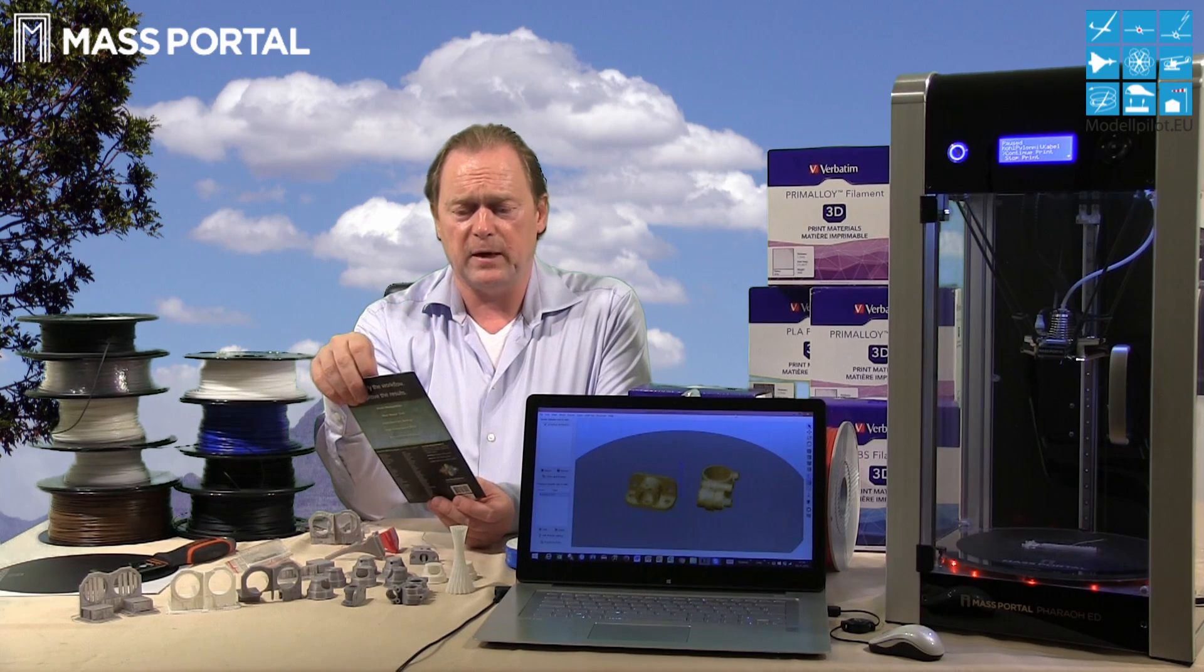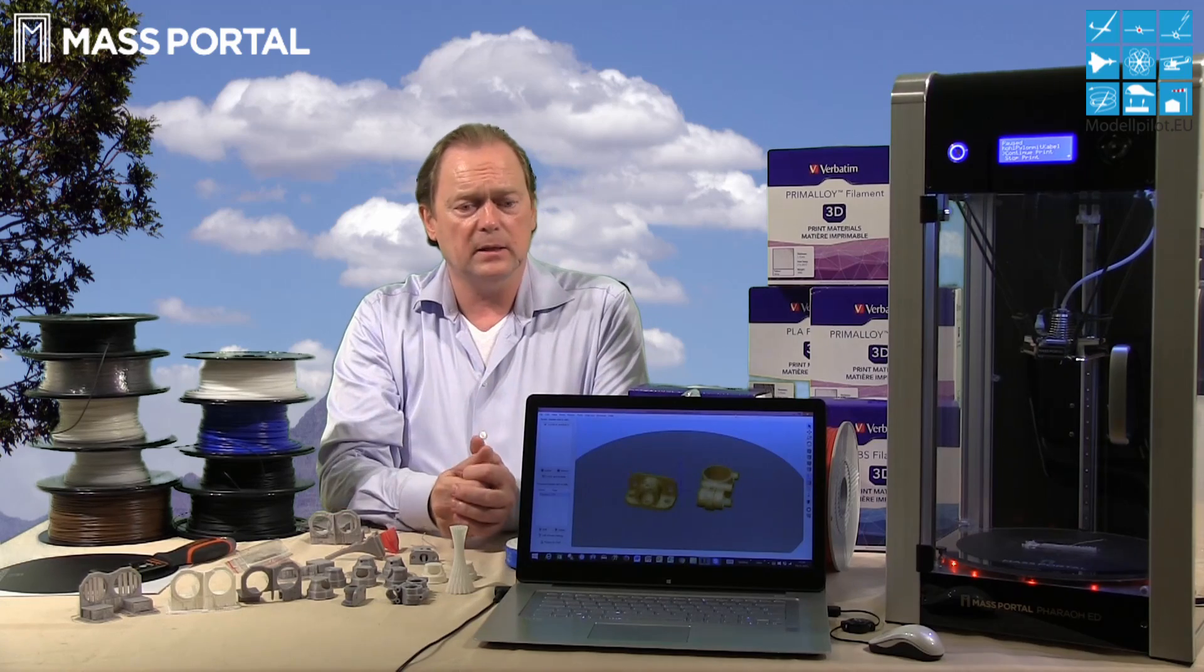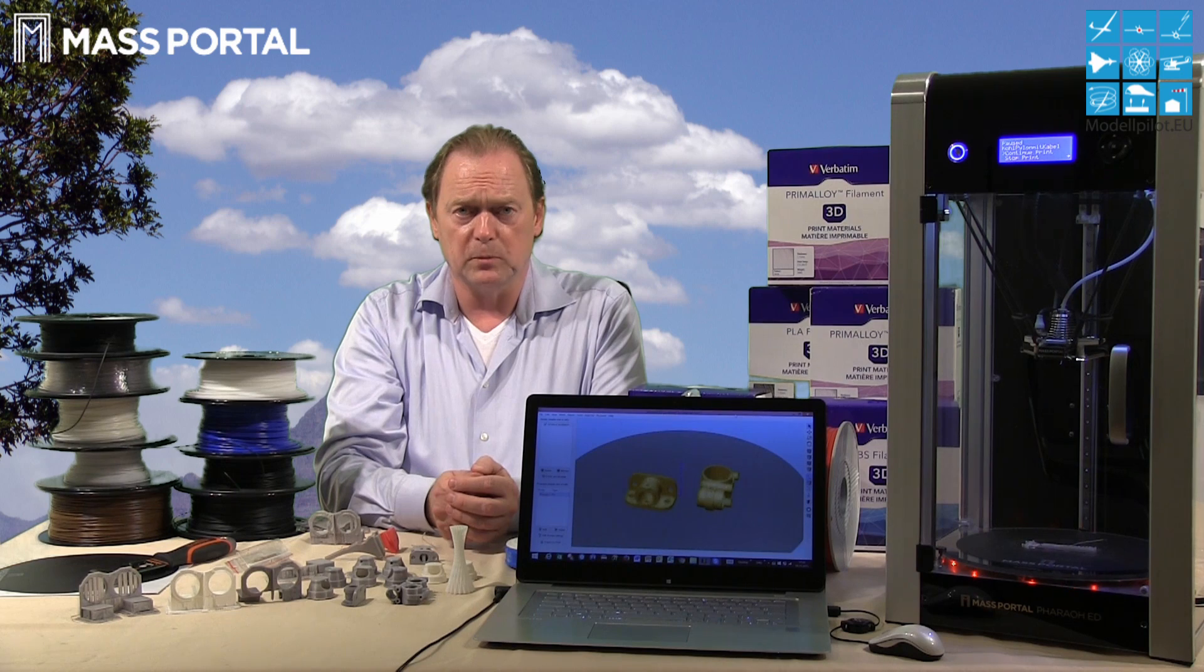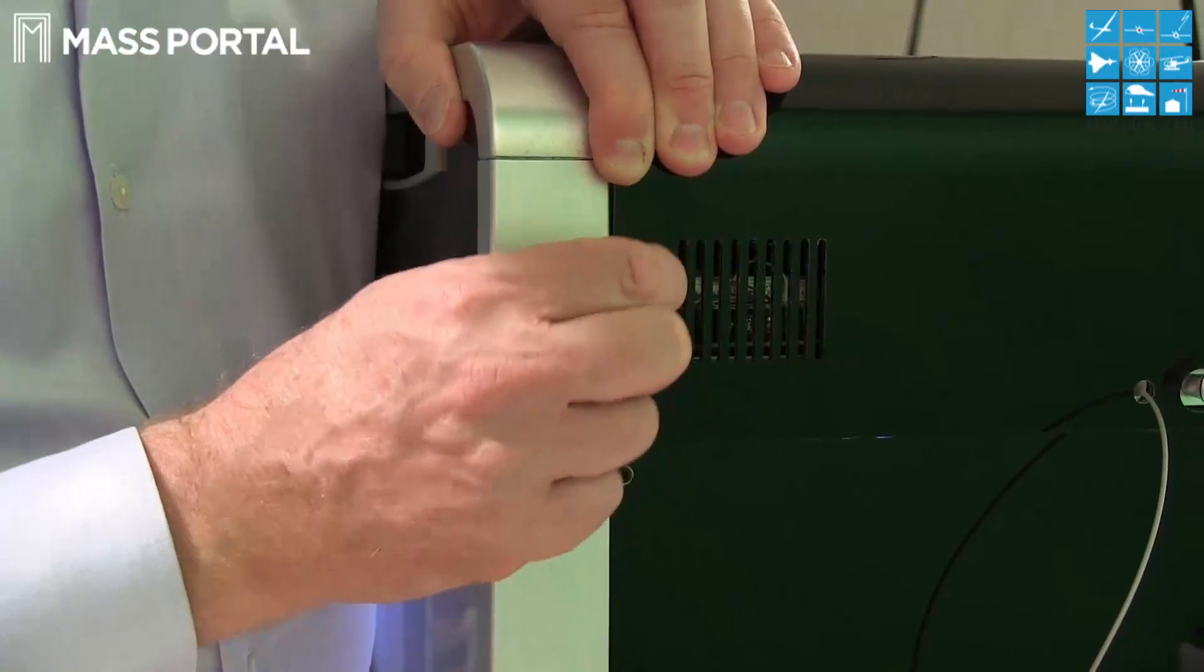Everything in the settings inside here, and with the MassPortal you get this software as well. This is Simplify3D, an only-one 3D software for printing and easy to use. You can do all the settings, and after you have made the settings for the material, you make the support. If the support is okay, you set it ready for printing, put it on the stick, and put it in the back of the MassPortal.